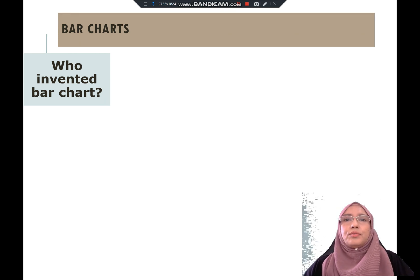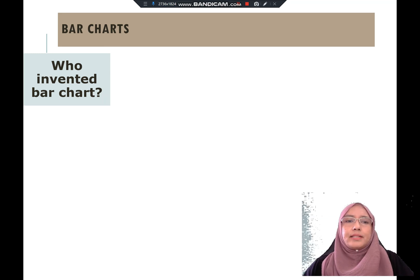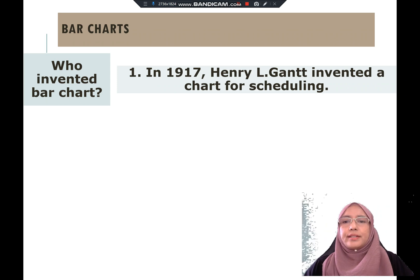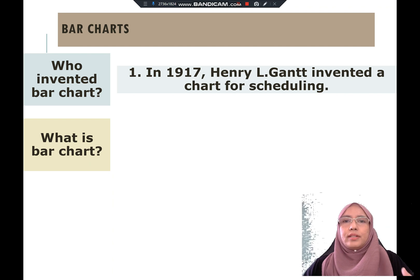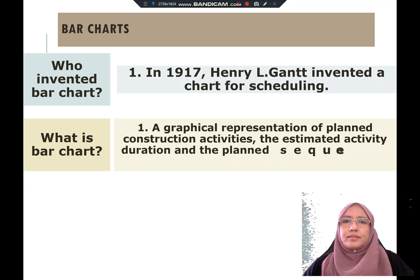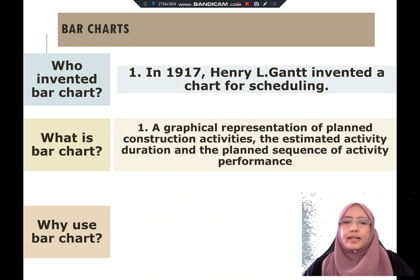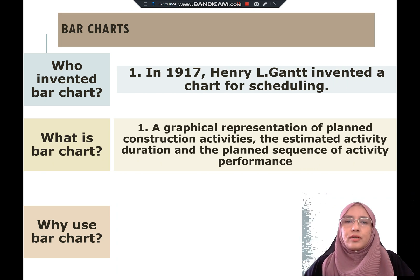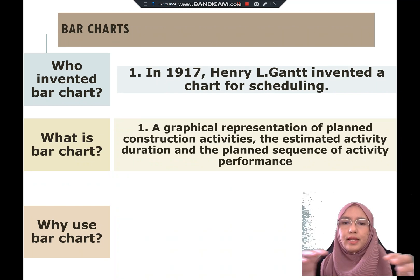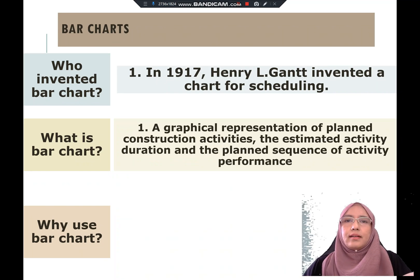As mentioned in the previous class, the bar chart was invented by Henry Gantt in 1917 to chart scheduling. A bar chart is a graphical representation of planned construction activities that estimates the activity duration and planned sequence of activity performance. All activity durations and sequences are put into a graphical representation.